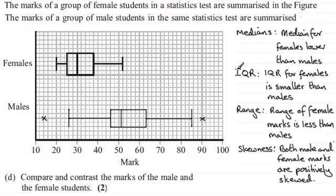Or you could give a comment on the interquartile range. The interquartile range for the females — that's that width there — is much smaller than that of the males.